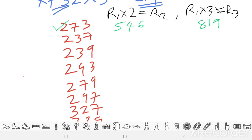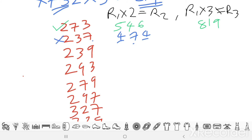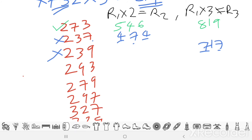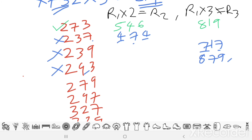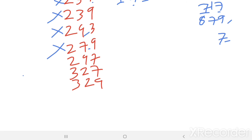For 237: 237 × 2 = 474 — digits 4 and 7 repeat, so eliminate. For 239: 239 × 3 = 717 — digit 7 repeats, eliminate. For 293: 293 × 3 = 879 — digit 9 repeats, eliminate. For 279: 279 × 3 = 837 — digit 7 repeats, eliminate. For 297: 297 × 3 = 891 — digit 9 repeats, eliminate.